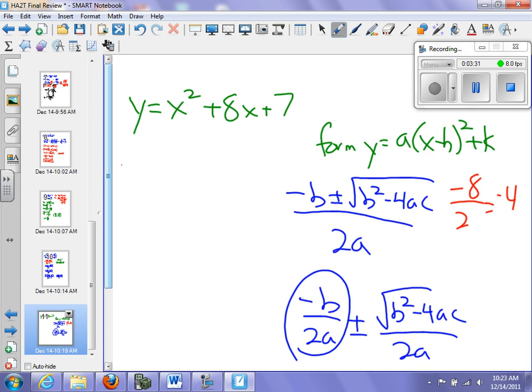So my y is equal to negative 4 squared plus 8 times negative 4 plus 7, and what does that simplify out to be? Negative 9. So y equals negative 9.